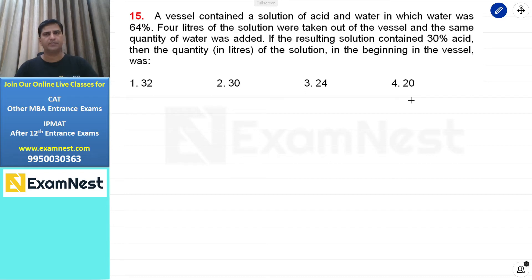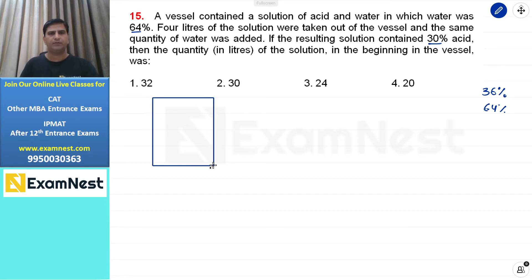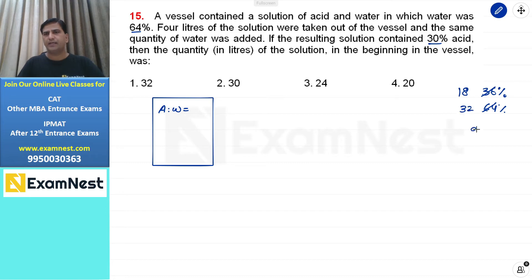यह question allegation and mixture पर based, एक moderate level का question है। A vessel contained a solution of acid and water in which water was 64%, तो acid होगा 36%। 4 liters of the solution were taken out of the vessel and the same quantity of water was added, resulting solution contained 30% acid। Ratio acid:water = 18:32 = 9:16।